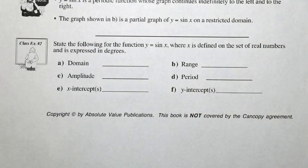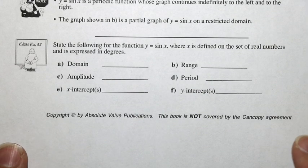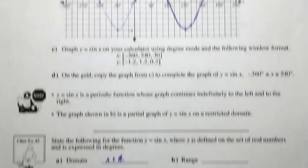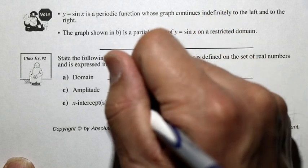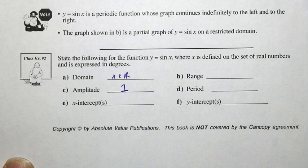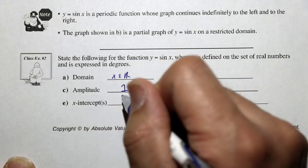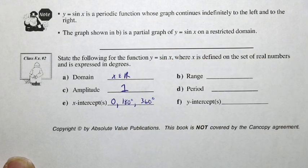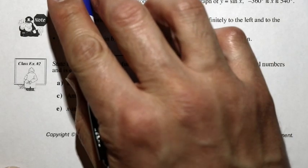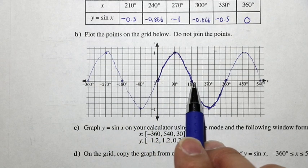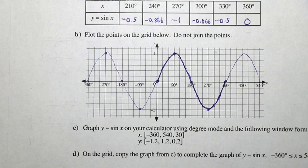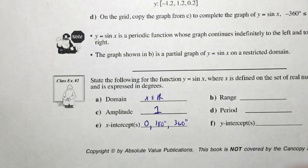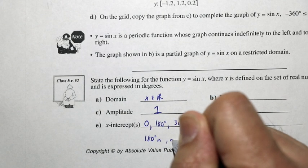We're going to state the following for the function y equals sine x, where x is defined on the set of real numbers and expressed in degrees. So the domain here, x can mean anything. When we take a look at this picture, you don't see any holes whatsoever. The amplitude, the maximum minus the minimum, 1 minus negative 1 divided by 2. The amplitude is 1. And where are the x-intercepts? The x-intercepts are at 0, 180 degrees, and 360 degrees. And a whole bunch more within this one. You can see that it's negative 360, negative 180, 0, 180, 360, 540. So on the set of real numbers, we can actually say that it's any multiple of pi, right? Any multiple of 180. So it could be 180 degrees n, where n could be any integer.